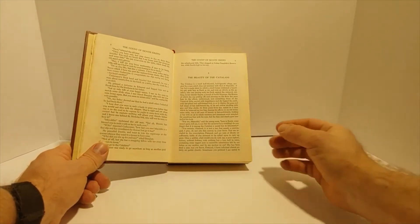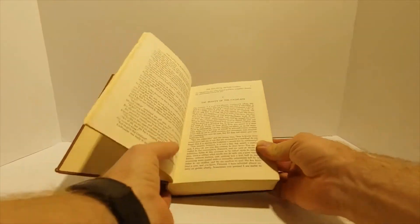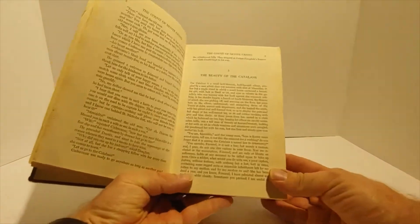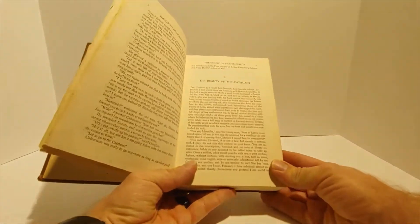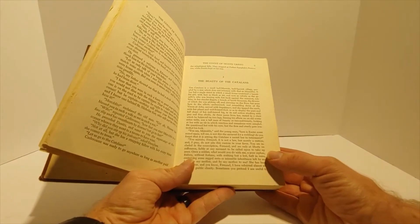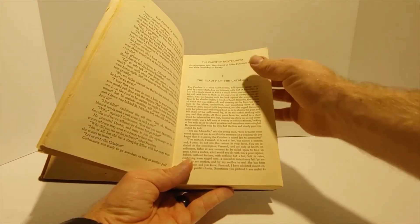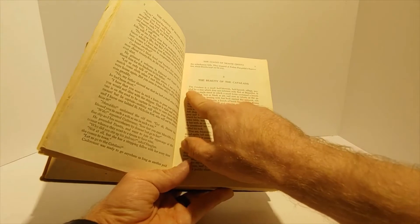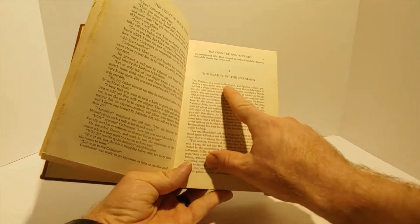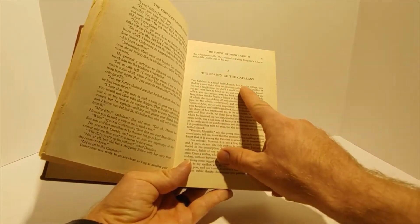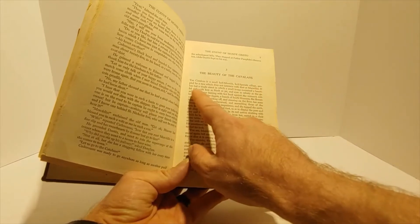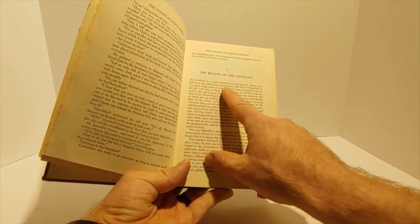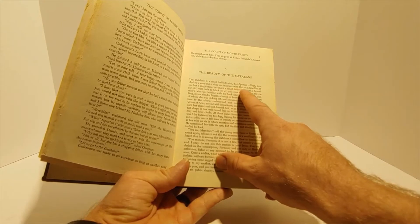Chapter 3: The Beauty of the Catalans. The Catalans is a small, half-Moorish, half-Spanish village, peopled by a race which does not intermix with that of Marseille.